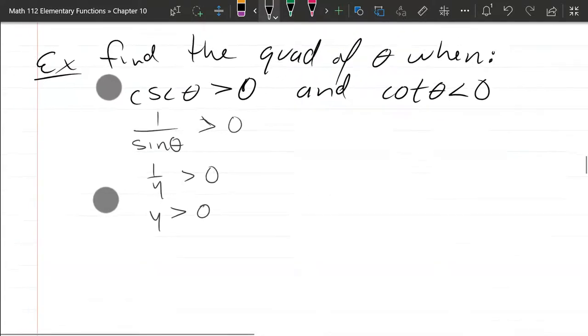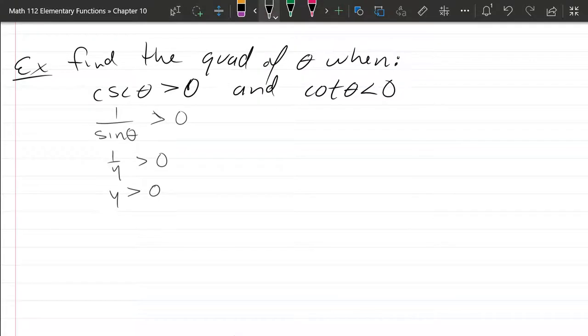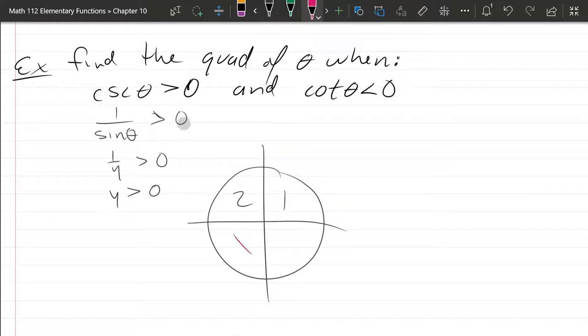All right, so right away we have narrowed it down pretty quick. y is positive, so it's definitely 1 or 2. 3 and 4 are out, so I'm going to put some red x's down there.